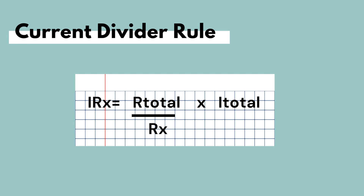Generally, the current divider rule is given as follows: I_x equals (R_total / R_x) times I_total, where R_x is the resistance in the parallel circuit whose current we are trying to find, R_total is the equivalent parallel resistance, and I_total is the current through the equivalent parallel resistance.